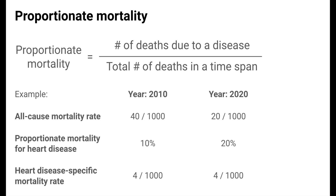So in both years, the risk of heart disease death in the general population is 4 in 1,000. The increase in proportionate mortality is due to the fact that there were fewer deaths in 2020, so the same number of heart disease deaths makes up a greater fraction of all deaths.